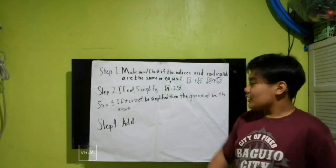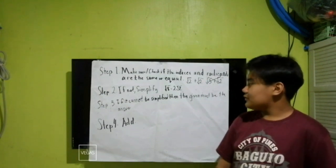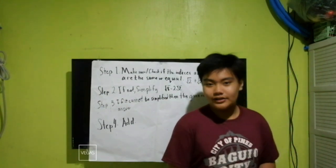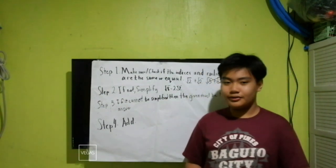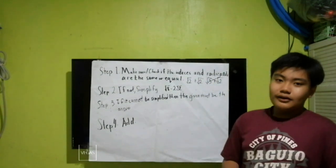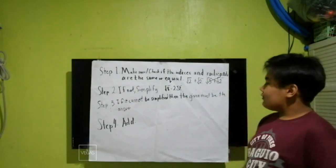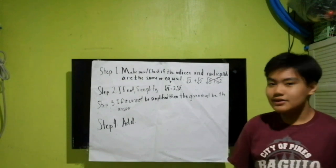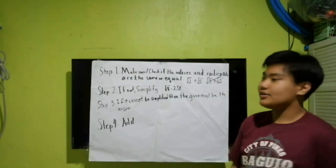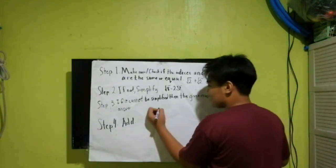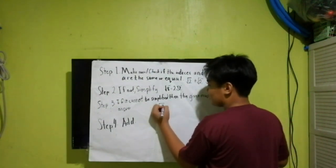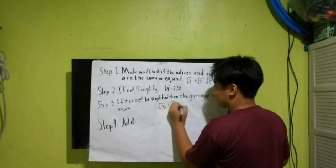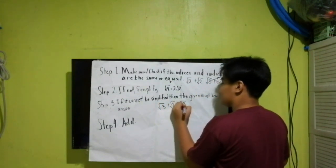Step two: if we cannot add terms with different radicands, then we should simplify. We can see this in square root of 8, which can be simplified into square root of 2. Step three: if it cannot be simplified, then the given expression must be the answer — such as square root of 3 plus square root of 2, which just equals square root of 3 plus square root of 2.